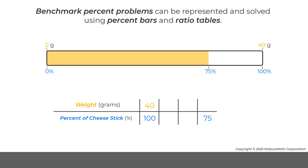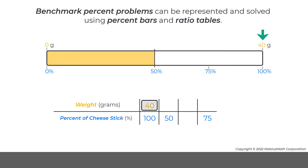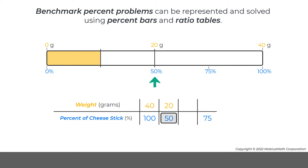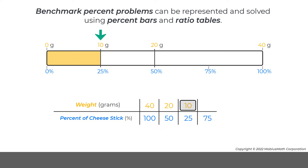First, half of 100% is 50%, so half of 40 grams is 20 grams. Next, this halving strategy can be reapplied to find half of 50% is 25%, and half of 20 grams is 10 grams.